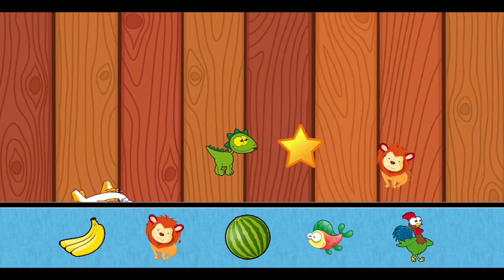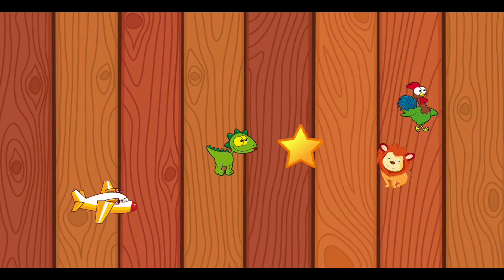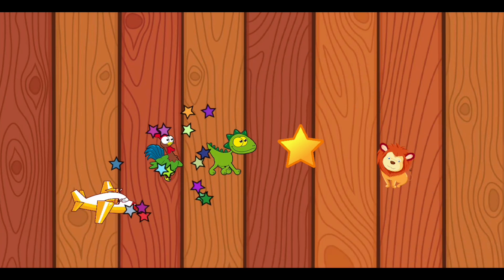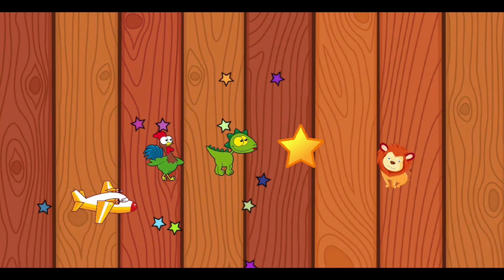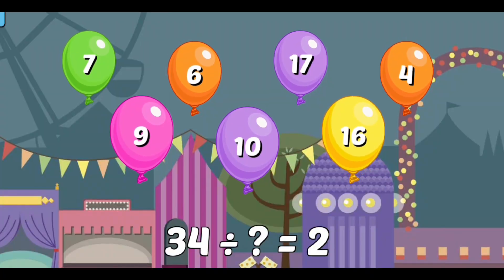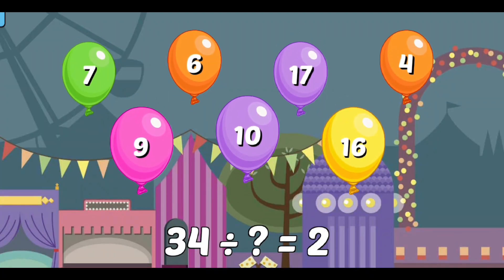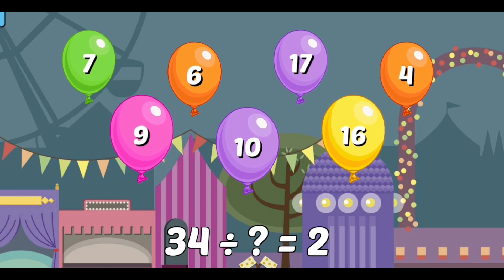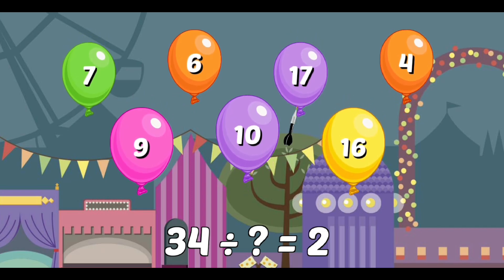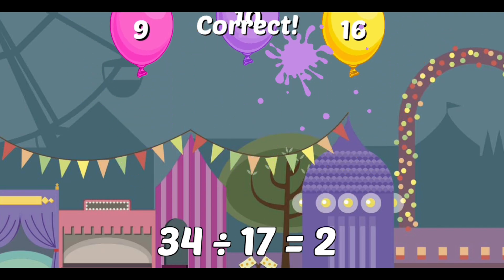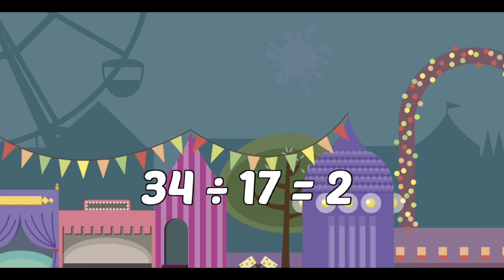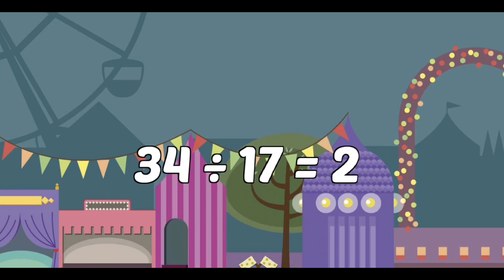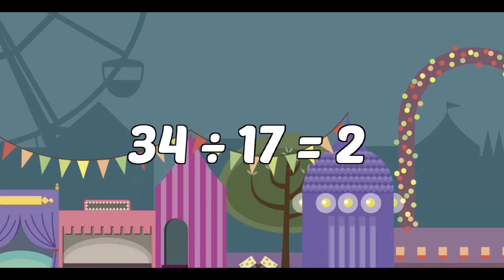Pick a new sticker! 34 divided by what equals 2? Correct! 34 divided by 17 equals 2.